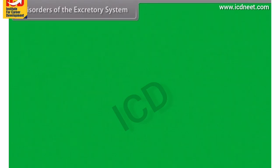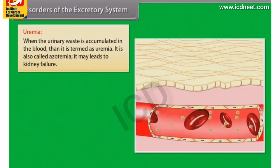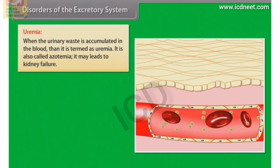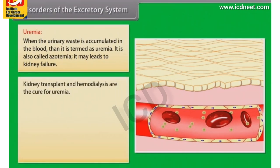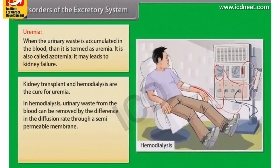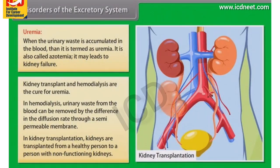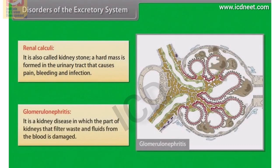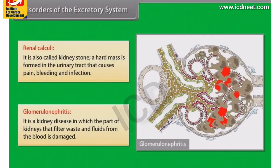Disorders of the excretory system: Uremia — when urinary waste accumulates in the blood, it is termed uremia (also called azotemia), which may lead to kidney failure. Kidney transplant and hemodialysis are treatments for uremia; in hemodialysis, urinary waste is removed from the blood by differences in diffusion rate through a semi-permeable membrane; in kidney transplantation, kidneys are transplanted from a healthy person to one with non-functioning kidneys. Renal calculi (kidney stones) — a hard mass formed in the urinary tract causing pain, bleeding and infection. Glomerulonephritis — a kidney disease in which the part of the kidney that filters waste and fluids from the blood is damaged.